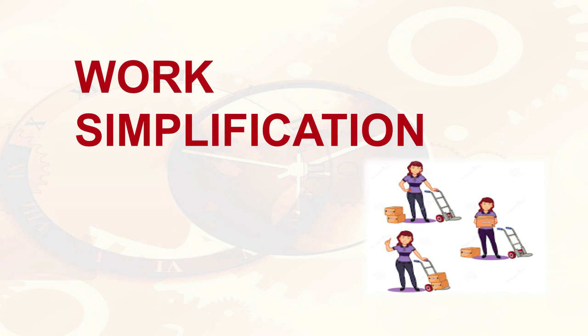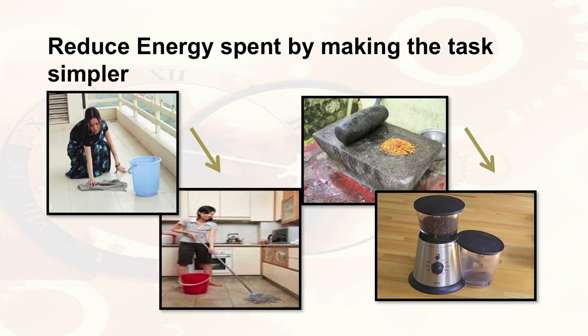There is a concept called work simplification — a method of saving time and energy by using different methods such as labor-saving devices to complete a task. In these two pictures, you can see a lady grinding spices on a stone. Here, the energy expenditure is very high because so many muscles are being used. The same thing can be done in a grinder.